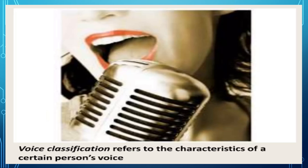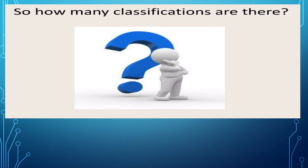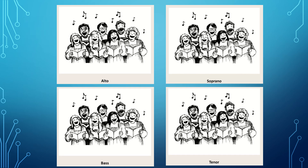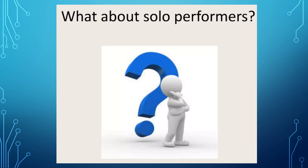Voice classification refers to the characteristics of a certain person's voice. For basic choir, there are four main voice classifications. For the female voice, the lowest registered voice is alto and the highest is soprano. For male voices, the lowest is bass and the highest register is tenor.